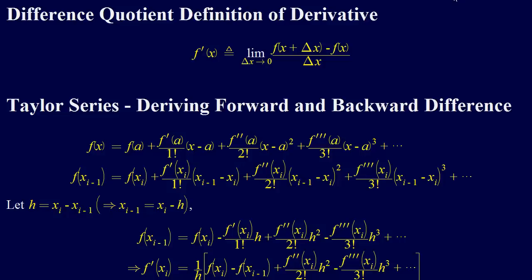To get started with numerical differentiation, the first thing we can do is look at the definition of the derivative from calculus. This is the difference quotient definition: f prime of x is defined as the limit as delta x goes to 0 of f of x plus delta x minus f of x all over delta x. Now, what happens if delta x is not 0, if it's some finite value?